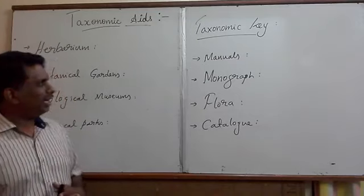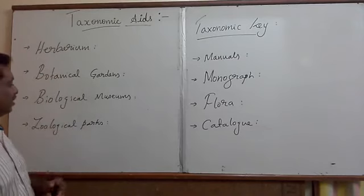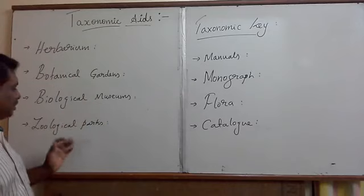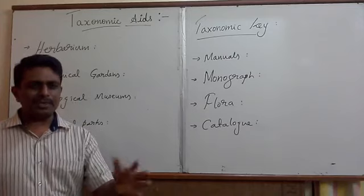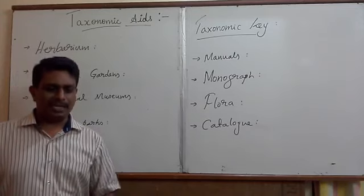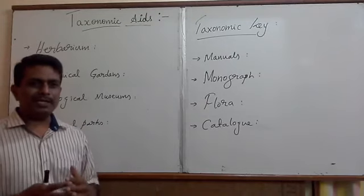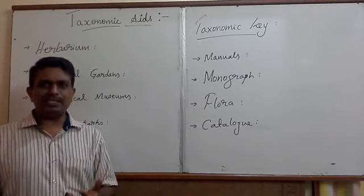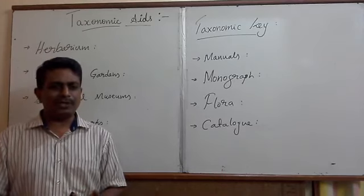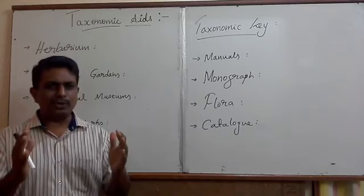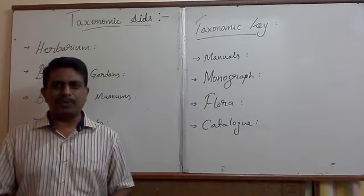Some of the important taxonomical tools are namely herbarium, botanical gardens, biological museums, zoological parks, and taxonomical keys. These are some of the important scientific tools and techniques widely used in laboratory conditions for systematic classification, identification, and for the naming of living organisms and for thorough scientific observations. These tools and techniques will play a very important role.